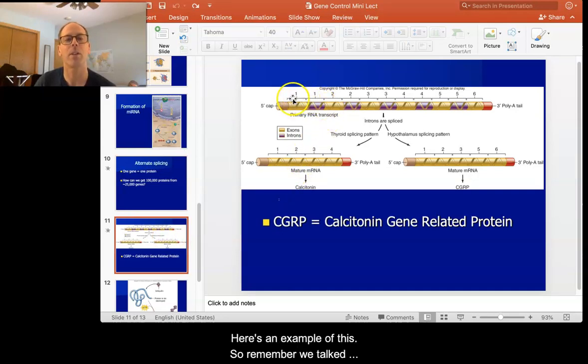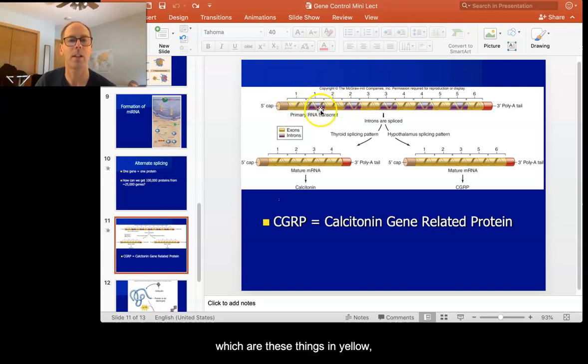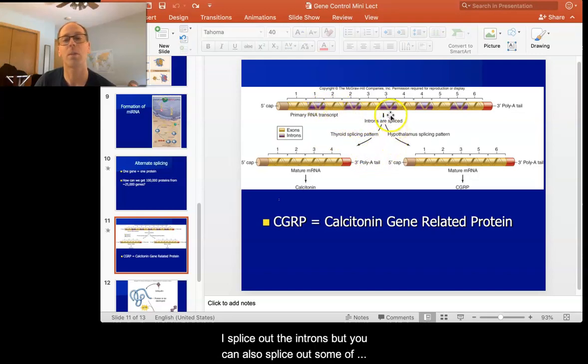And here's an example of this. So remember we talked about we have these exons, which are these things in yellow. We have introns, which are these things in purple. When I go to make the messenger RNA, the mature messenger RNA, I splice out the introns, but you can also splice out some of the exons.